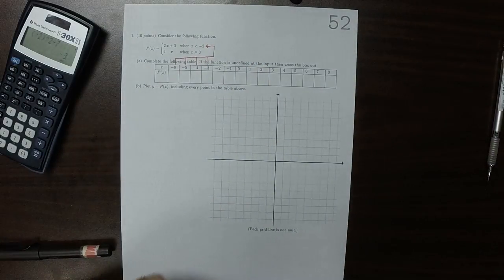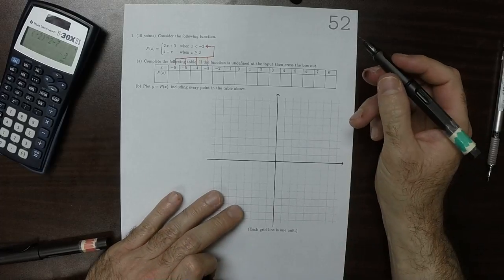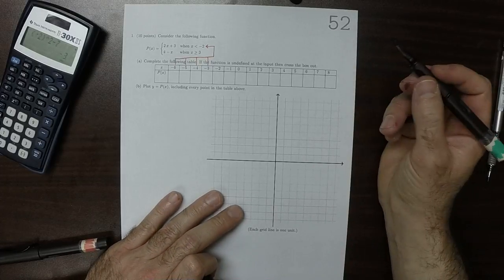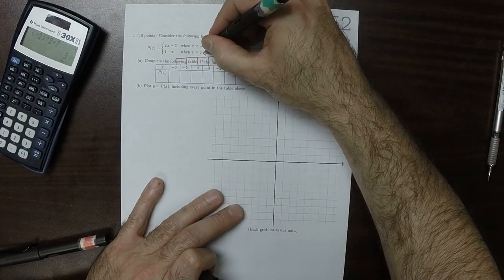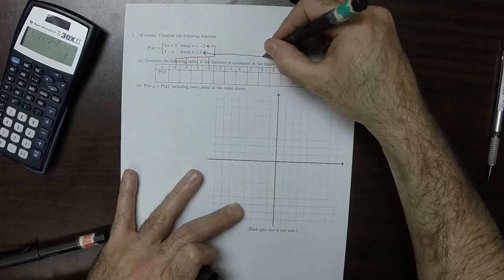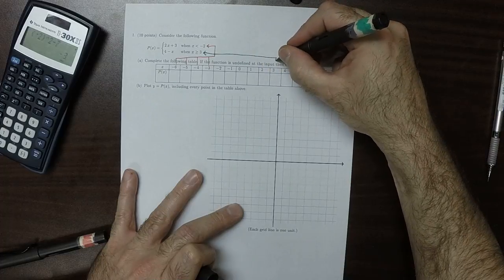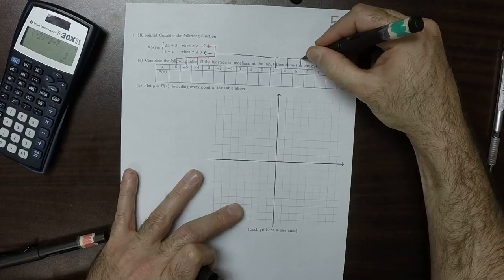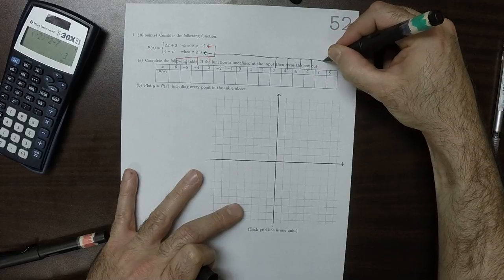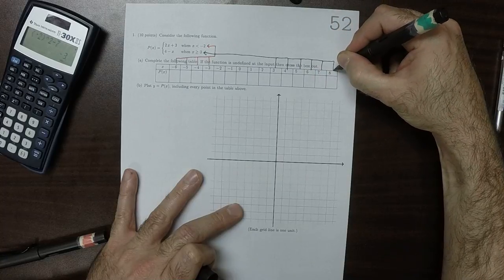So now which ones go to the second definition? Well, 3 is greater or equal to 3, so it's 4, 5, 6, 7, and 8.